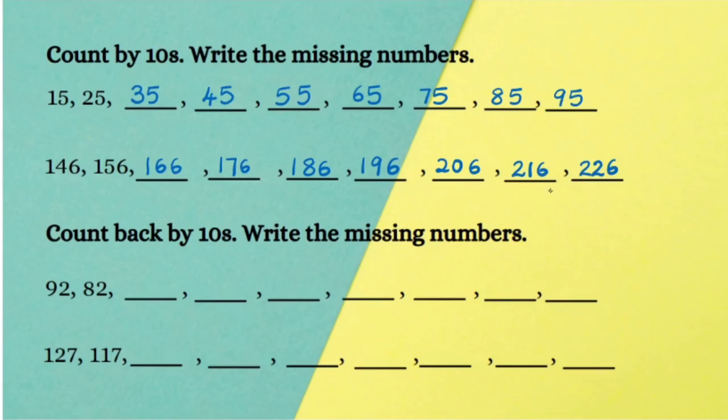The second question says count back by tens. So here we have to subtract 10: 92, 82, 72, 62, 52, and so on. The next question: 127, 117, 107, 97, 87, and so on.